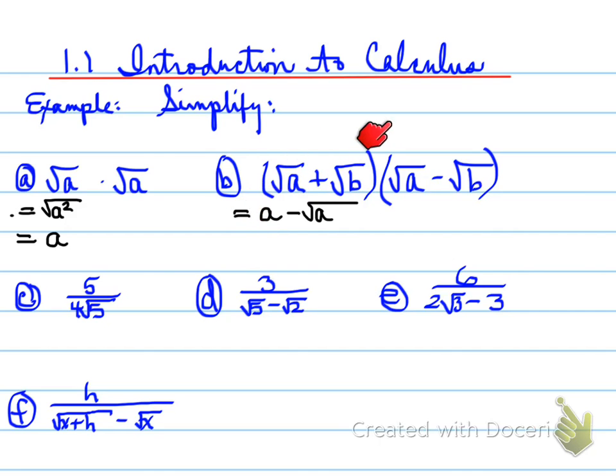Root A times minus root B is minus root AB. Then the next one's going to be plus root AB. That's these two multiplied, that's the insides, and then finally the last two get multiplied, and you get minus B.